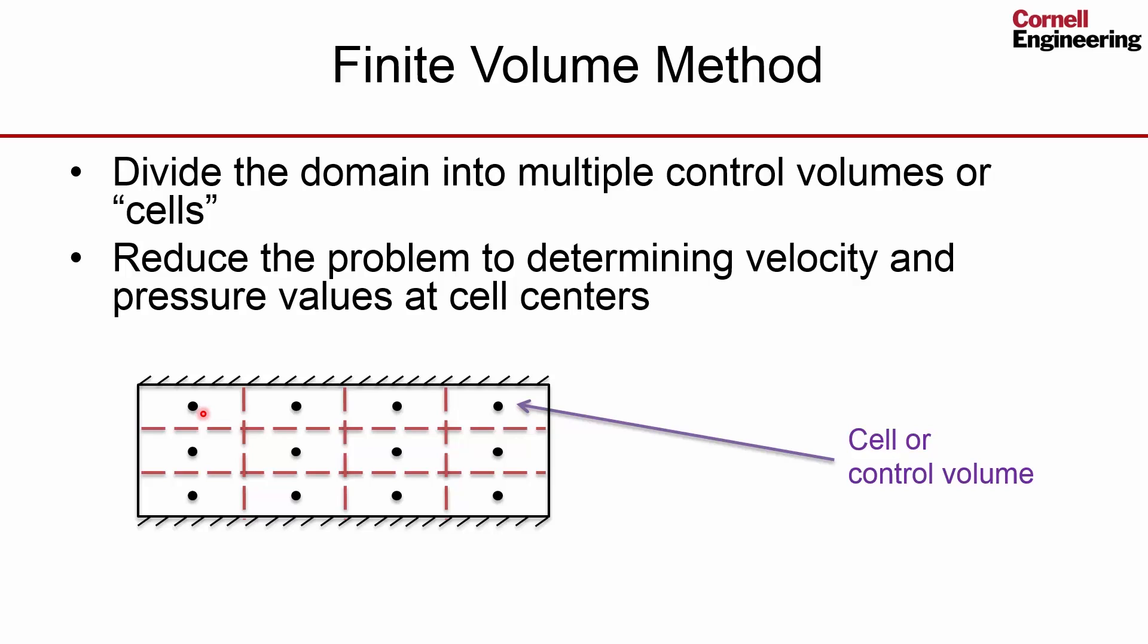So we've gone from determining unknown functions to selected variables at selected points. This process is called discretization, where you're reducing the problem to determining just a finite set of values.